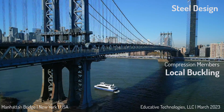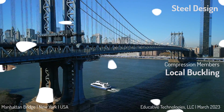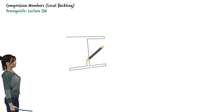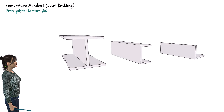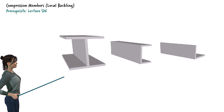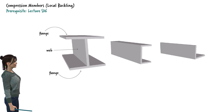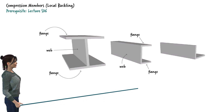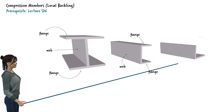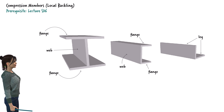Steel design: compression members and local buckling. Most standard steel sections can be viewed as having two or more cross-sectional elements. For example, a wide flange section has two flange plates and one web plate, totaling three cross-sectional elements. Similarly, a channel section combines two flanges and a web. A single angle consists of two legs, each being a rectangular plate.